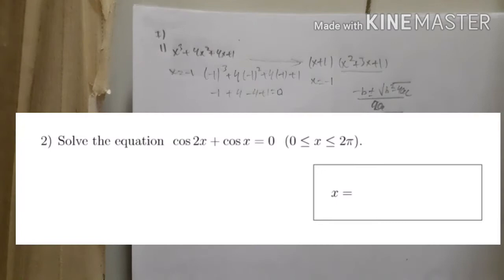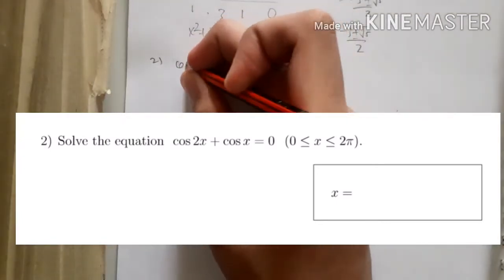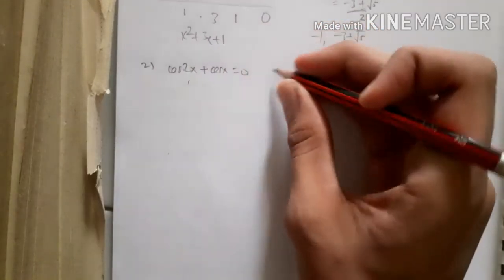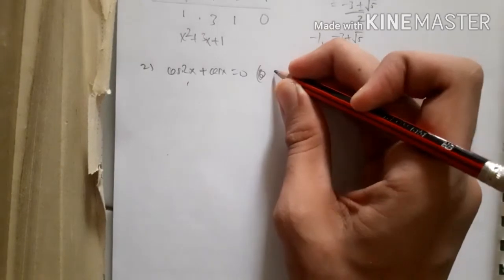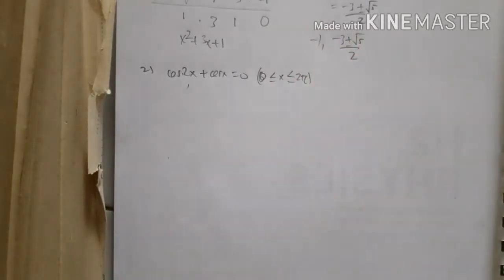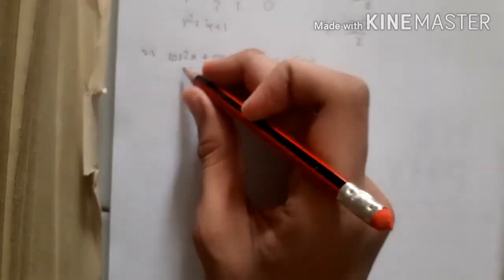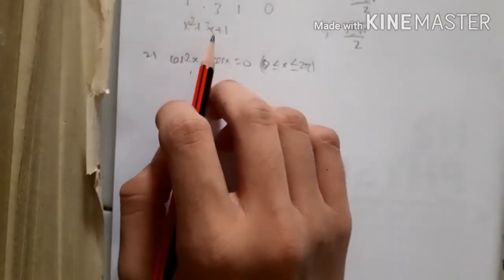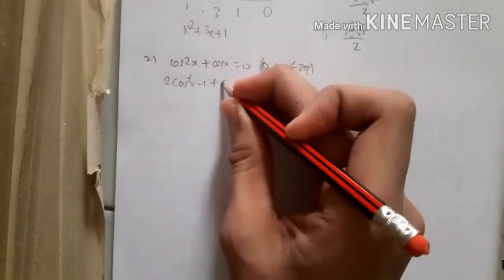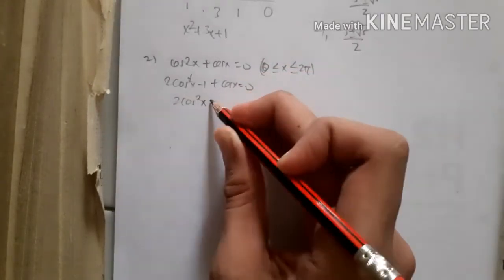For problem 2, we solve the trigonometric equation cos 2x + cos x = 0 on the interval [0, 2π]. We substitute the identity cos 2x = 2cos²x − 1, giving 2cos²x − 1 + cos x = 0, then rearrange the equation.